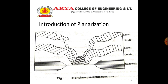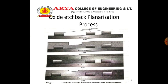After this, we have the oxide etch-back planarization process as shown in the diagram. In the first step, a thick oxide is deposited over a patterned metal layer. Next, a layer of photoresist is deposited over the wafer. Then the wafer is put into a plasma etch system. The etch is done until most of the resist has been removed.